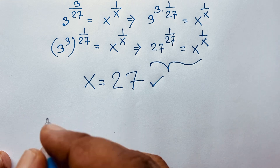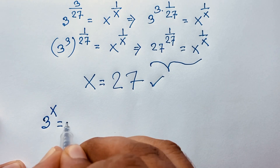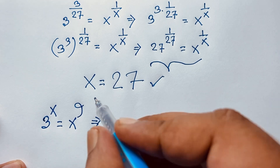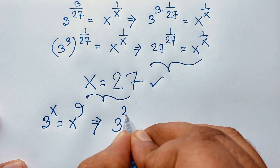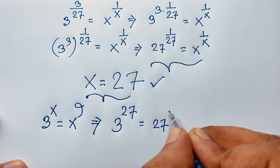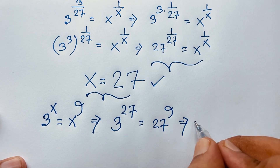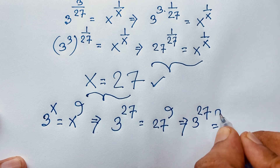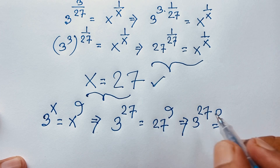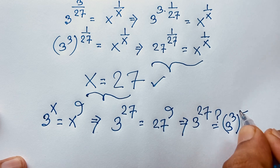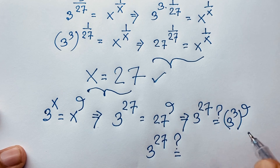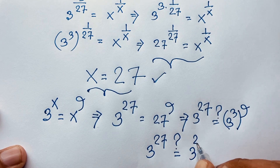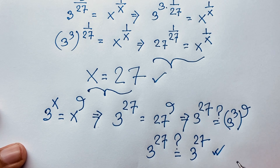Let's verify our answer. Our question is 3^x equals x^9, and we found x equals 27. So 3^27 should equal 27^9. On the right side, 27 equals 3^3, so 27^9 equals (3^3)^9 equals 3^(3·9) equals 3^27. Both left-hand side and right-hand side are equal, confirming our answer.